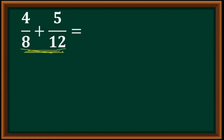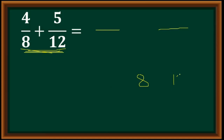How do we solve dissimilar fractions? First, you need to identify the LCD, or the least common denominator. How do we solve for the least common denominator? We can use continuous division. We can solve like this — 8 and 12.